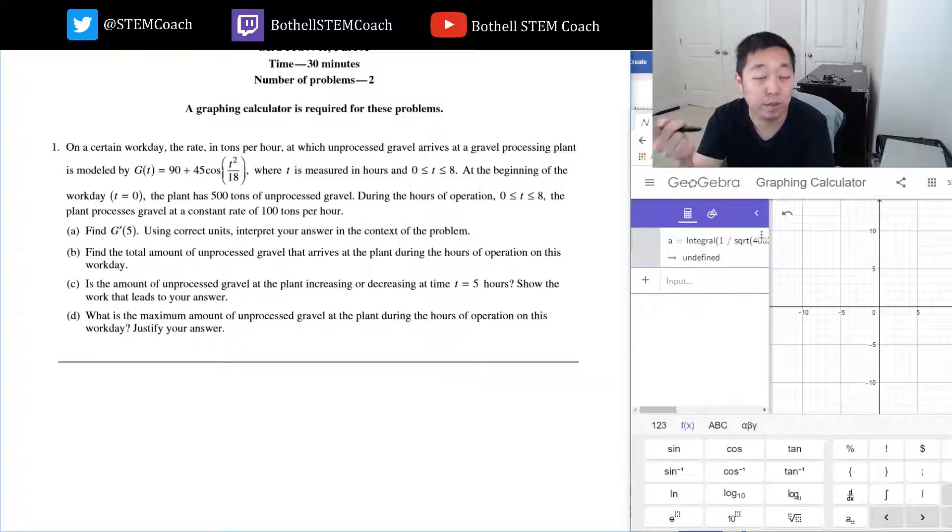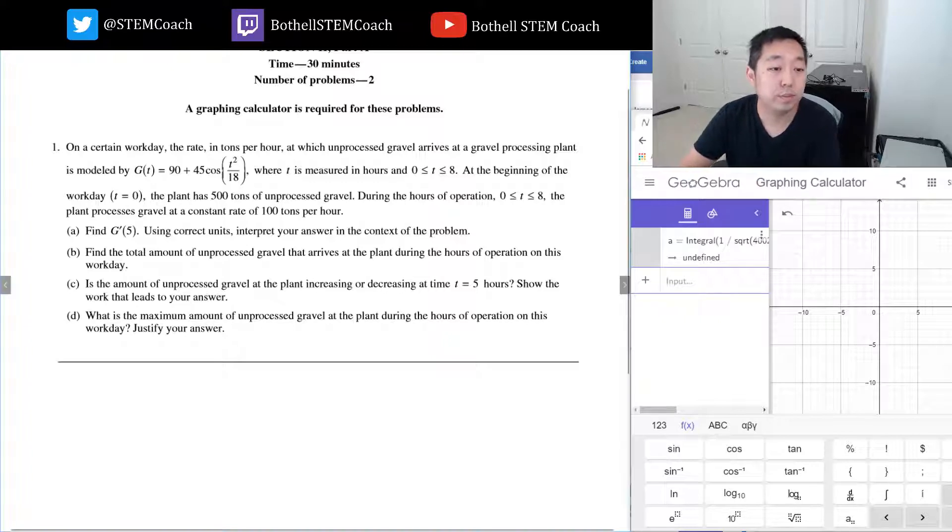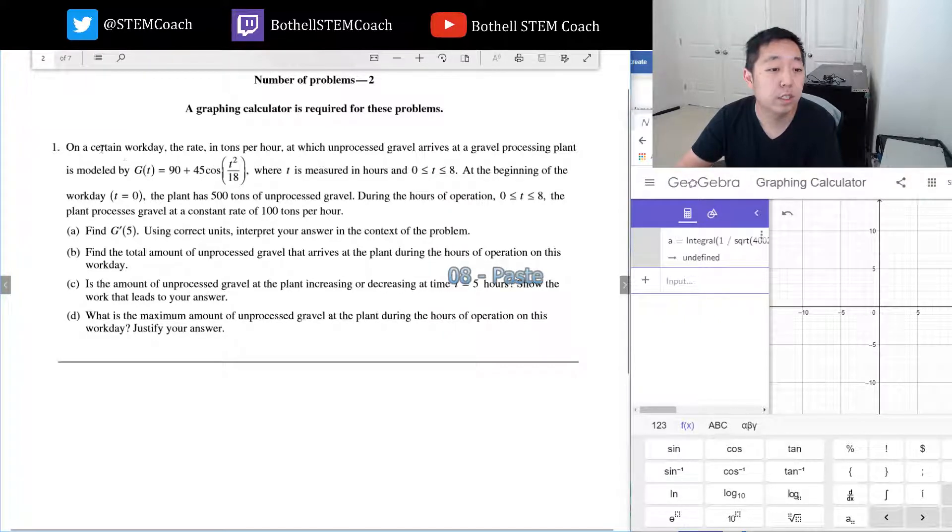On a certain workday, let me switch to drawing. On a certain workday, the rate in tons per hour at which unprocessed gravel arrives at a gravel processing plant is modeled by g(t) equals this, where t is measured in hours.